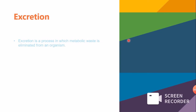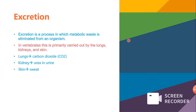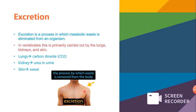Next is excretion. Excretion is the process by which metabolic waste is eliminated from an organism — putting all waste products out of the body. In vertebrates such as humans, this is primarily carried out by the lungs, kidneys, and skin. The lungs exhale carbon dioxide, which is a waste product. The kidneys filter waste from the blood, and putting out sweat through the skin is also a form of excretion.